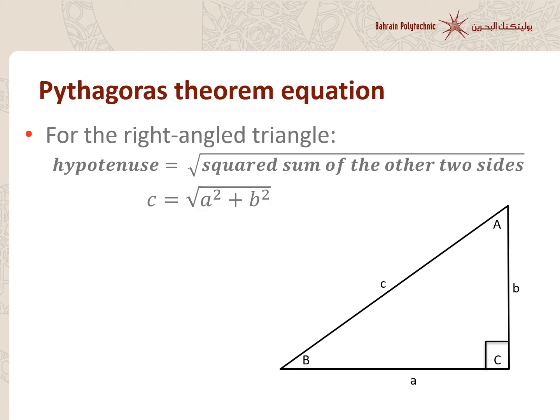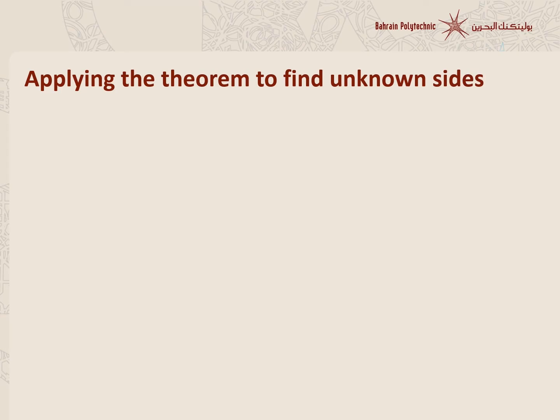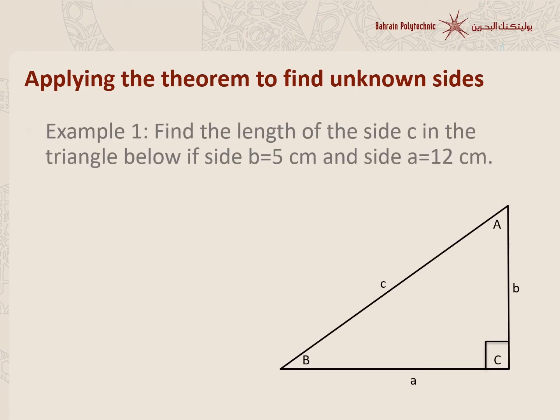I would like to emphasize that this rule or theorem cannot be applied on other types of triangles — it is applicable only on right angle triangles. So let's apply this theorem on examples and see how we can use it. Let's say that I have this triangle here where, according to the question, it is a right angle triangle because we have angle C equal to 90 degrees, so we can use Pythagoras' theorem.